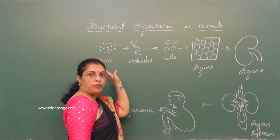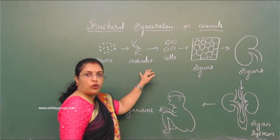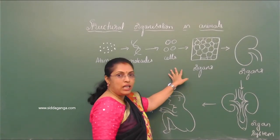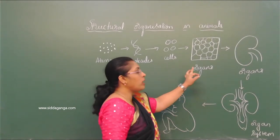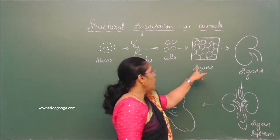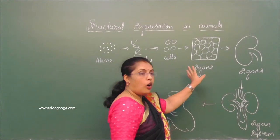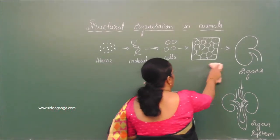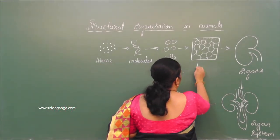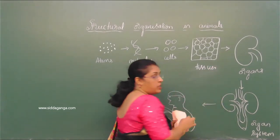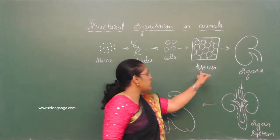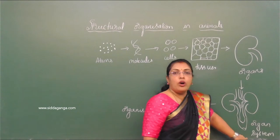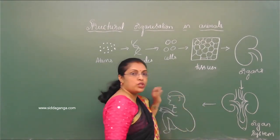From atoms, molecules are formed; from molecules, cells are formed. When cells group together to perform a common function, tissues are formed. These tissues form organs, then organs form organ systems, and different organ systems help in the formation of organisms.